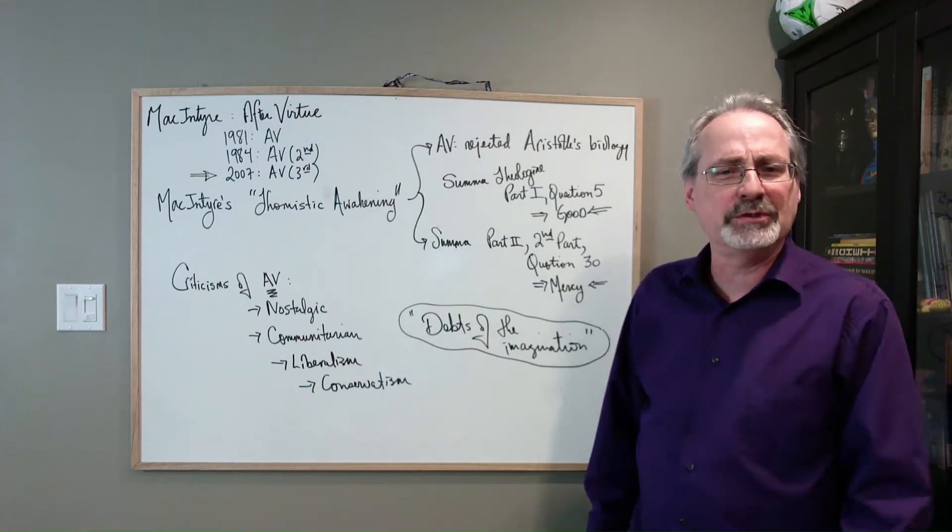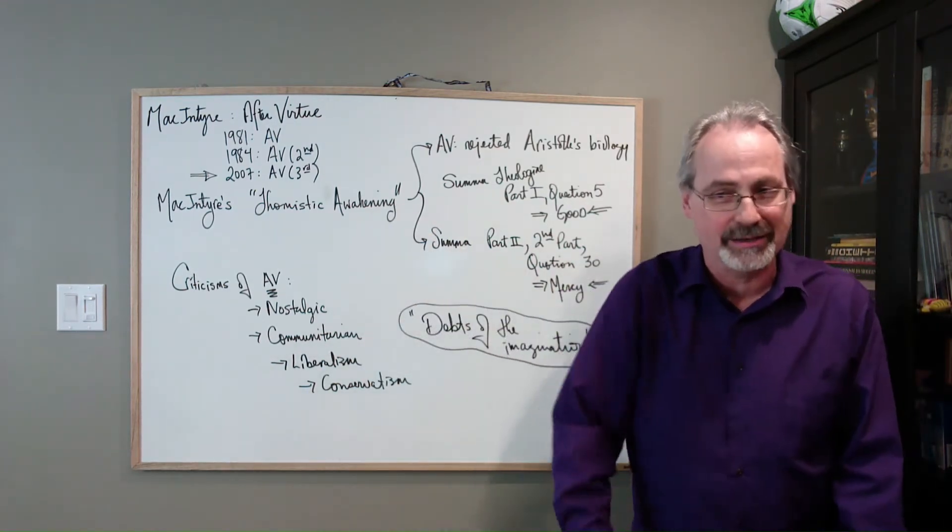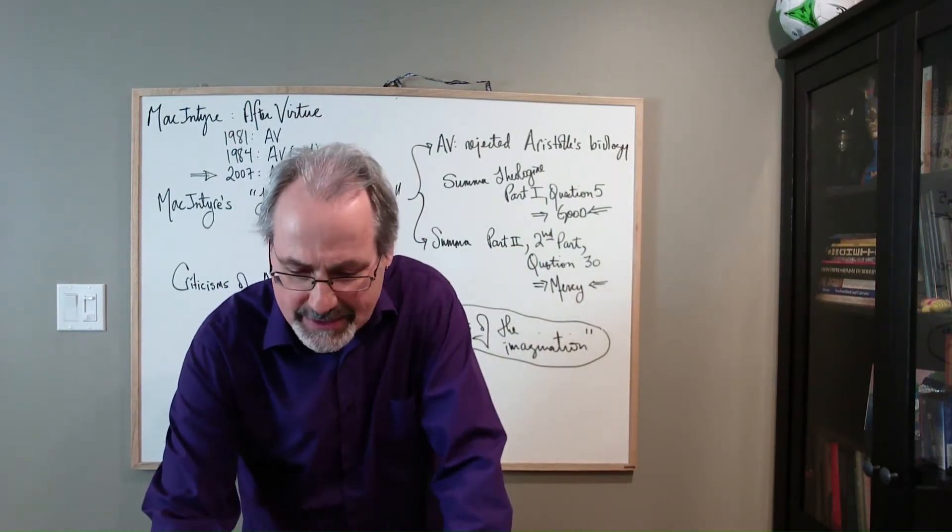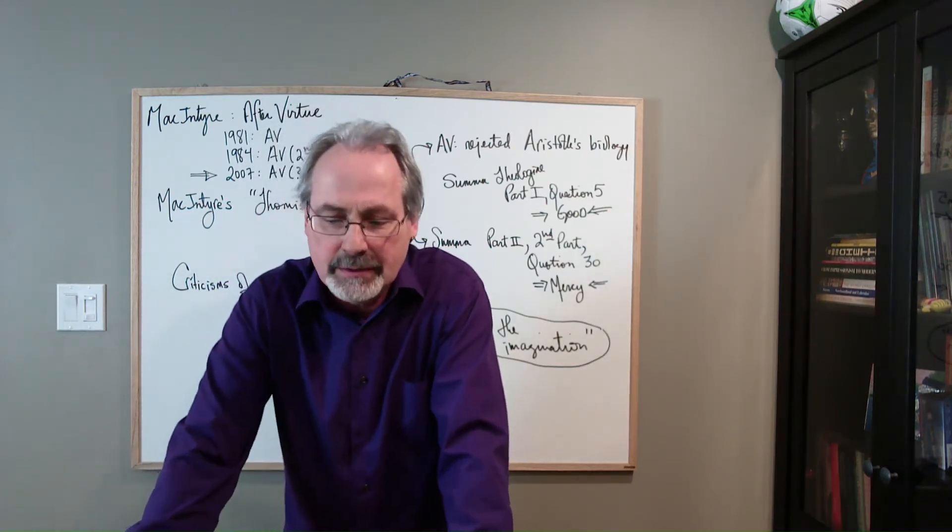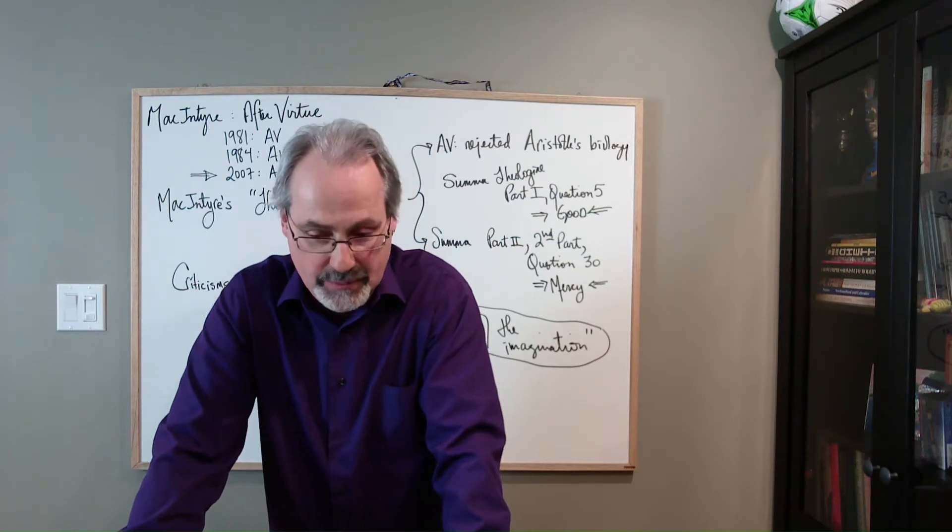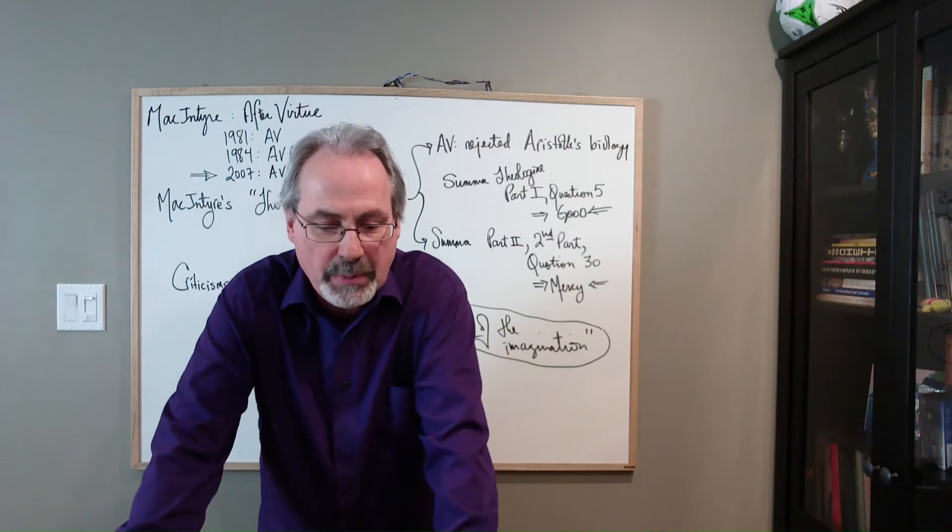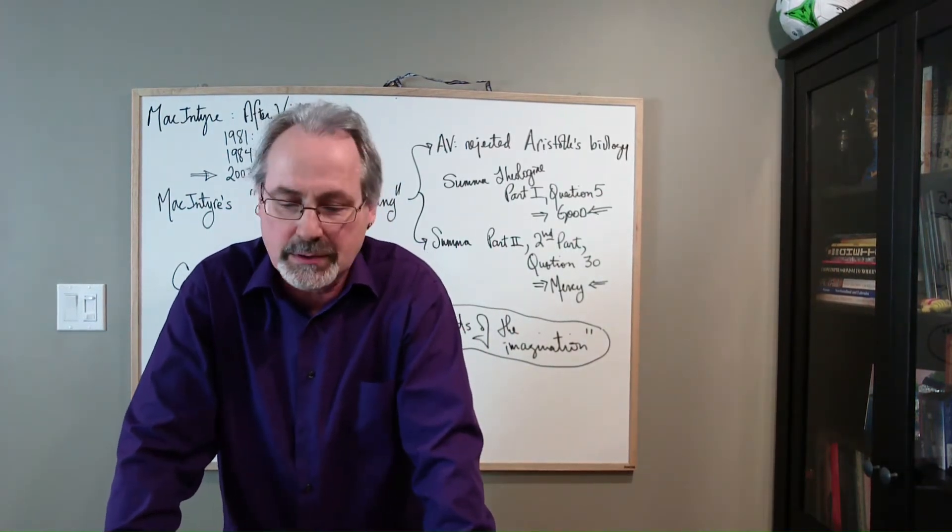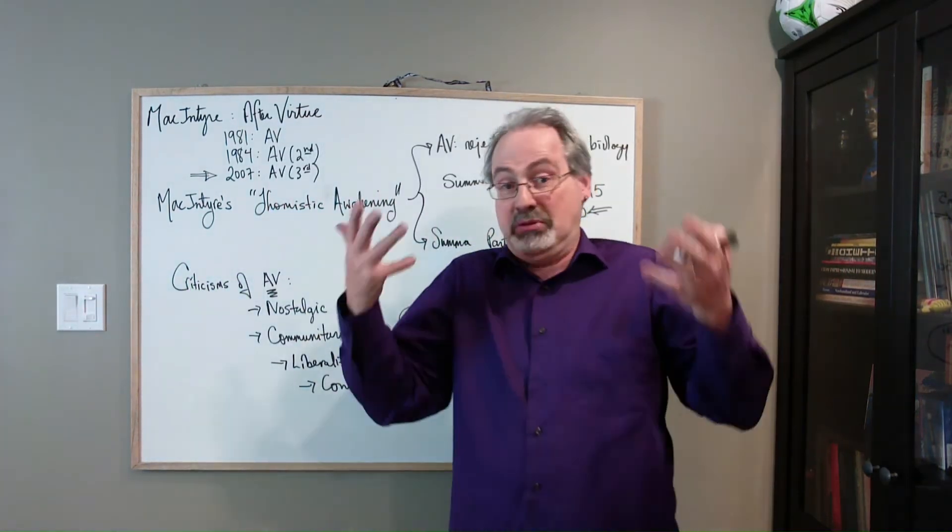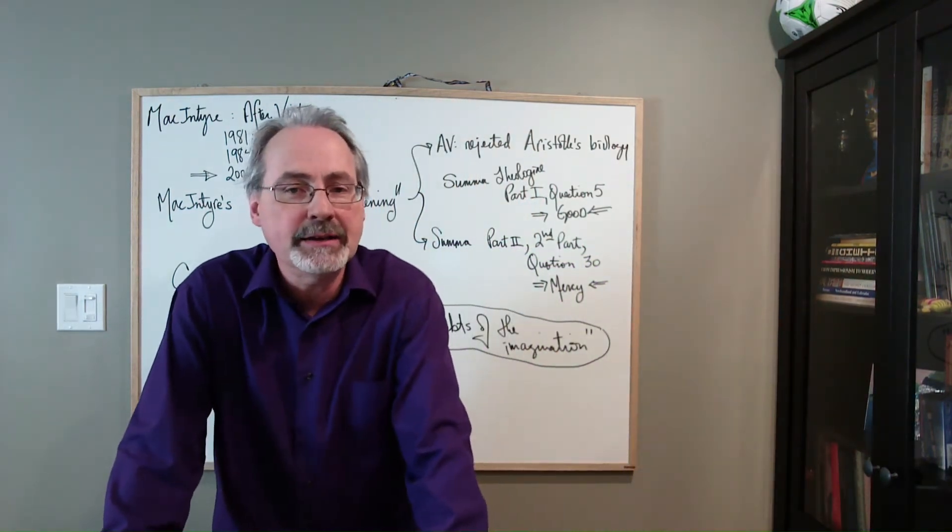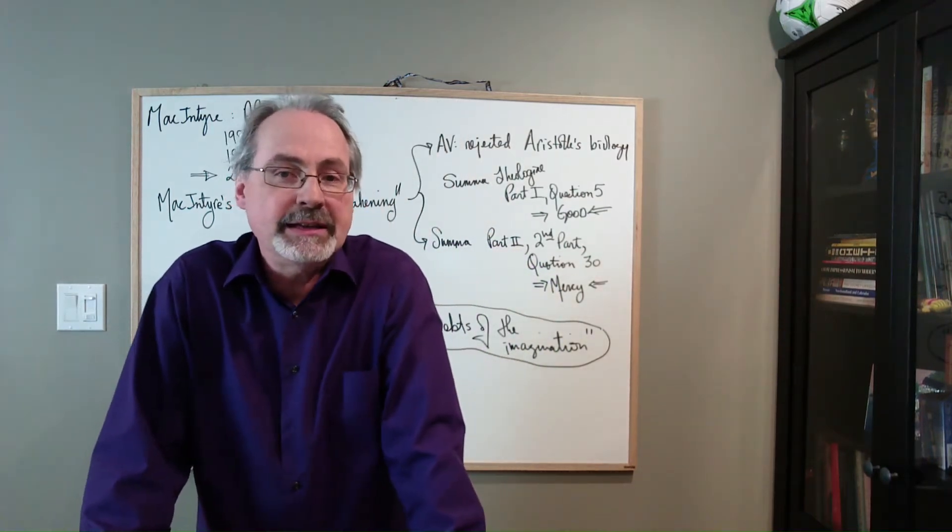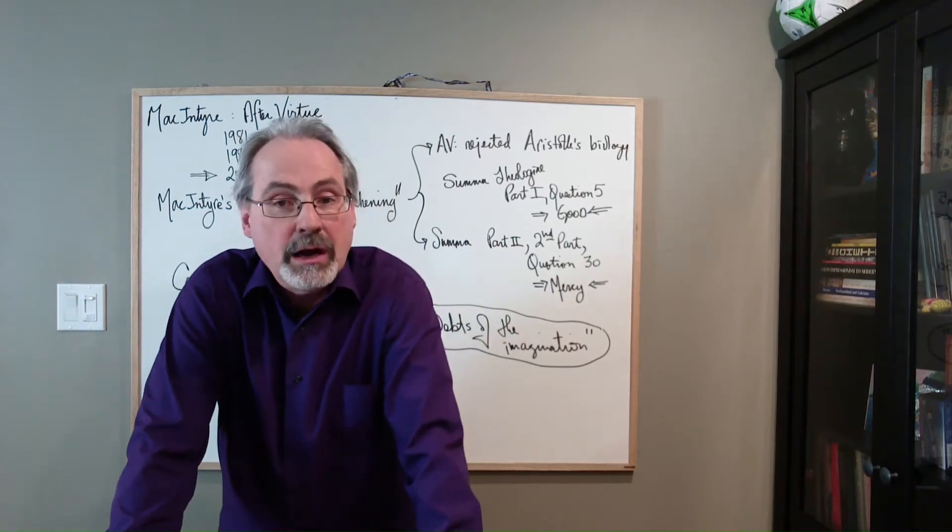One criticism was that After Virtue is just this big nostalgia. You want to go back to Aristotle, to Aquinas, real old conservative stuff. MacIntyre says he's not trying to idealize the past. He denies being an idealist about the past, but he says we need to understand ourselves in the light of the Aristotelian tradition to help us overcome the limitations of other traditions.